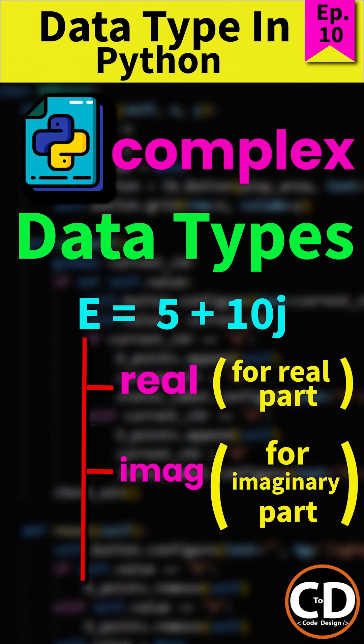Now, to access the real parts of a complex number, we use a predefined attribute called real, and to access the imaginary parts, we use imag.